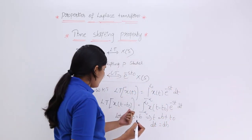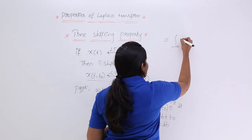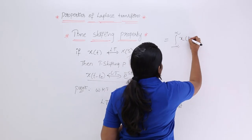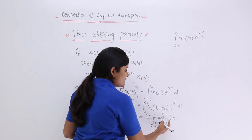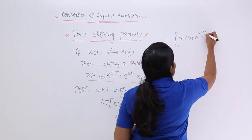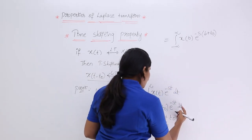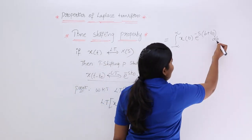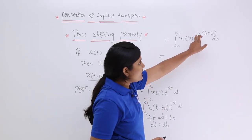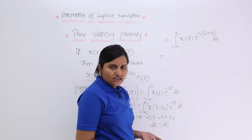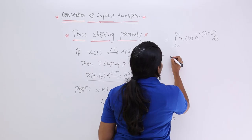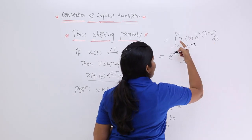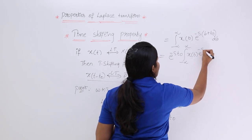Substituting these into the equation, the Laplace transform of X of T minus T naught becomes the integral from minus infinity to infinity of X of B into E power minus S times (B plus T naught) dB. We are integrating in terms of B, and the E power minus S T naught term is a constant with respect to B, so we can take it outside the integral. The remaining integrand is X of B E power minus SB dB.